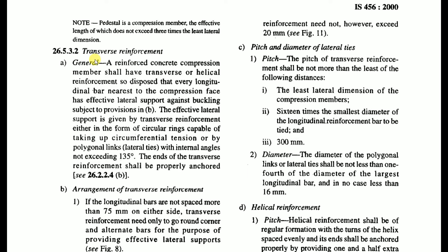Now let's look at the codal provision for transverse reinforcement in IS 456:2000, Clause 26.5.3.2. The general requirement states that a reinforced concrete compression member shall have transverse or helical reinforcement so disposed that every longitudinal bar nearest to the compression face has effective lateral support against buckling. The effective lateral support is given by transverse reinforcement either as circular rings or polygonal links (lateral ties) with internal angles not exceeding 135 degrees. The ends of the transverse reinforcement shall be properly anchored.